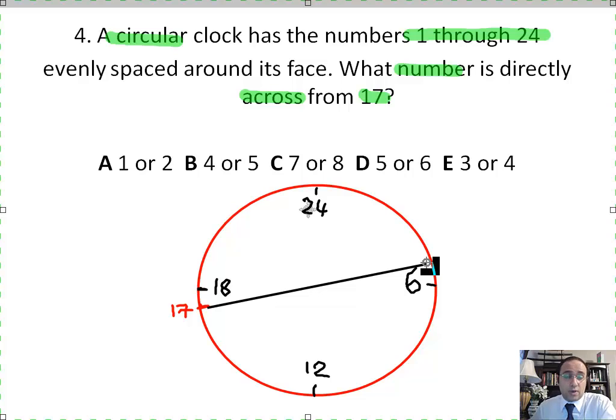But nobody said so. Across means across, which is right here. So the number across from 17 is going to be the number right here. What's the number that's going to be right after 6? The number is going to be 7. So the number across from 17 is 7.